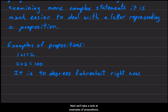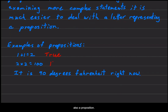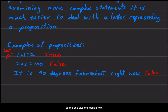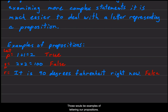Next, we'll take a look at examples of propositions. The first one, 1 plus 1 equals 2, is a proposition because it can be evaluated to true or false — this one evaluates to true. The second one, 2 times 2 is equal to 100, is also a proposition; however, this time the value is false. The third one, 'it is 90 degrees Fahrenheit right now' — as I'm writing this, it is not, so at this point in time it evaluates to false. We could letter each of these: let P be '1 plus 1 equals 2', let Q be '2 times 2 equals 100', and let R be 'it is 90 degrees Fahrenheit right now'. Those would be examples of lettering our propositions.